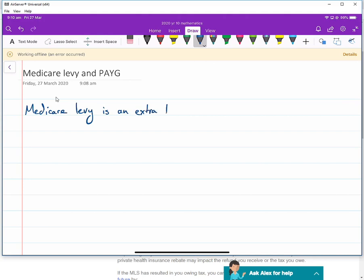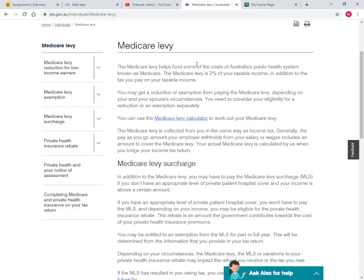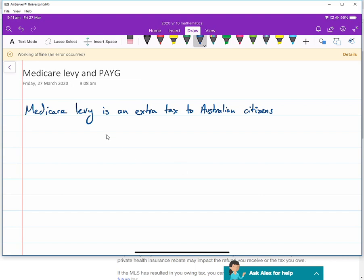So Medicare Levy is an extra tax to Australian citizens. Some people in Australia that are working do not have to pay the Medicare Levy. That's because it would be unfair to them because they do not get cover by a Medicare card. A lot of families have a Medicare card so you can go to the doctor for free. That is paid for by this Medicare Levy.